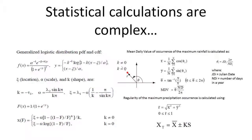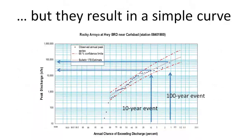The flood calculations are pretty involved and complex — it involves a lot of statistics and other modeling approaches. As a result, we just have a simple curve, the frequency curve, which tells you for a 100-year flood or a 10-year flood what the peak flow is at a certain river.